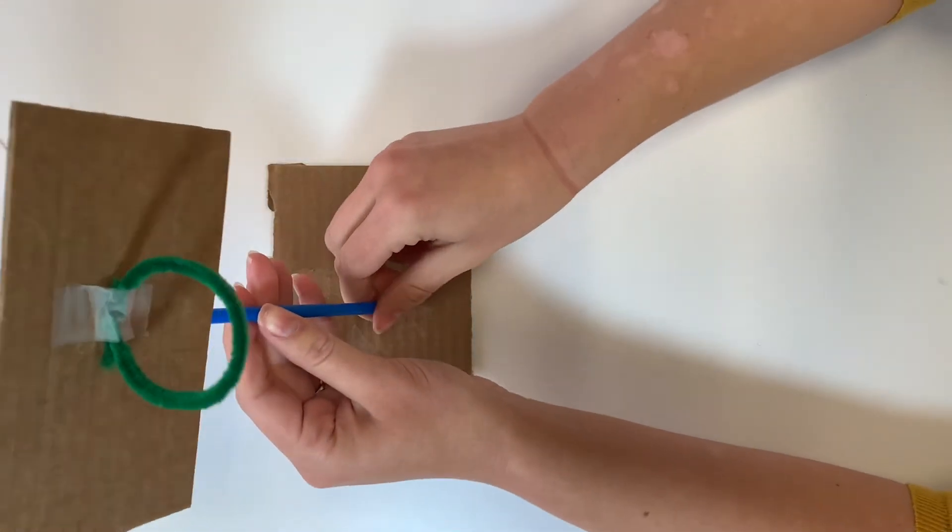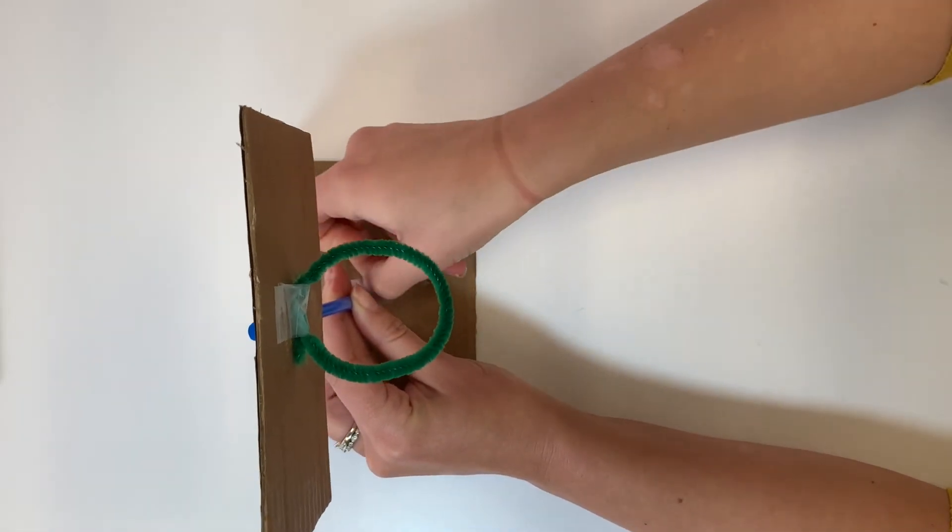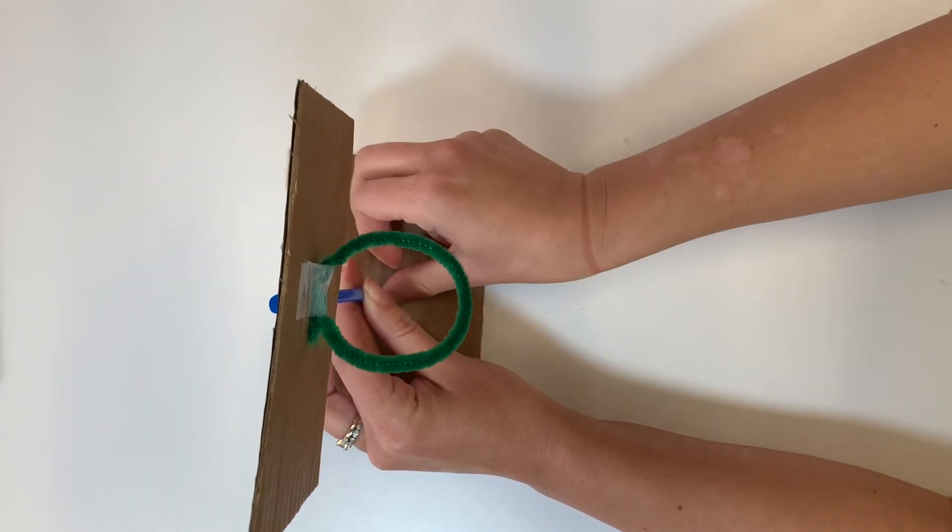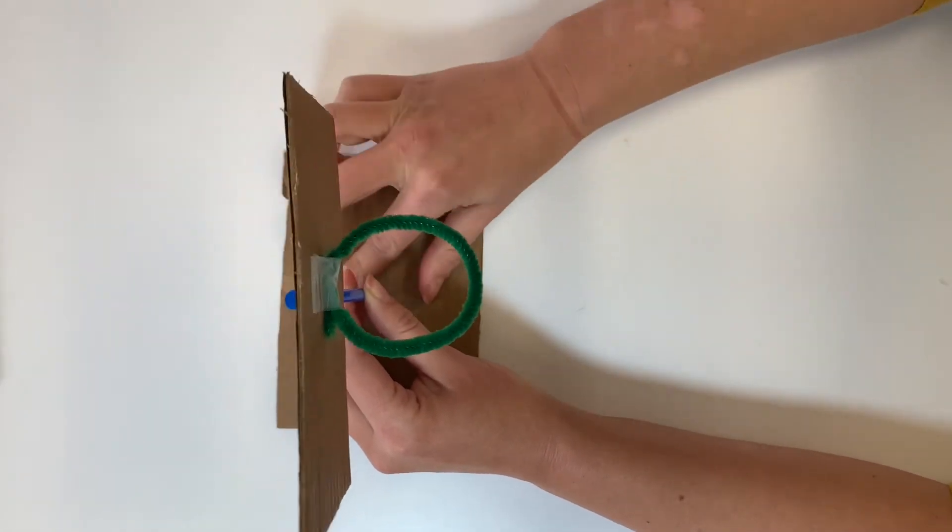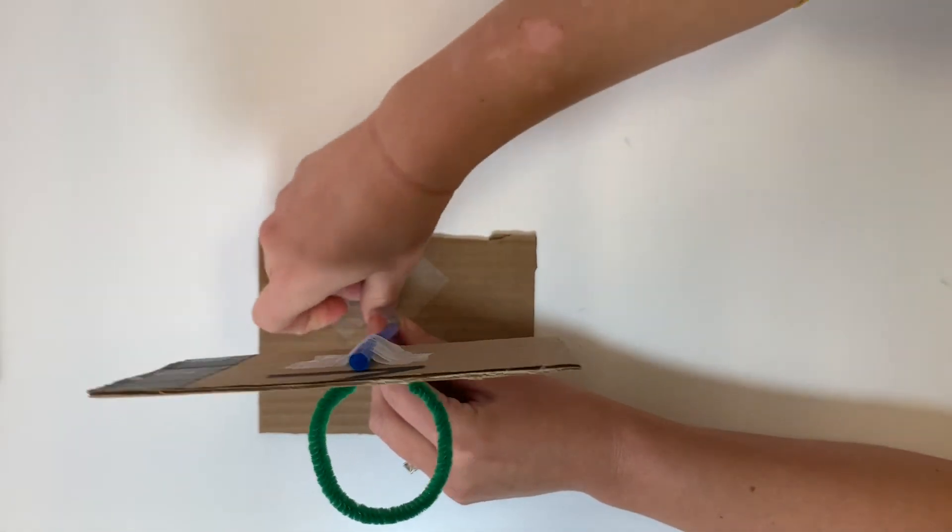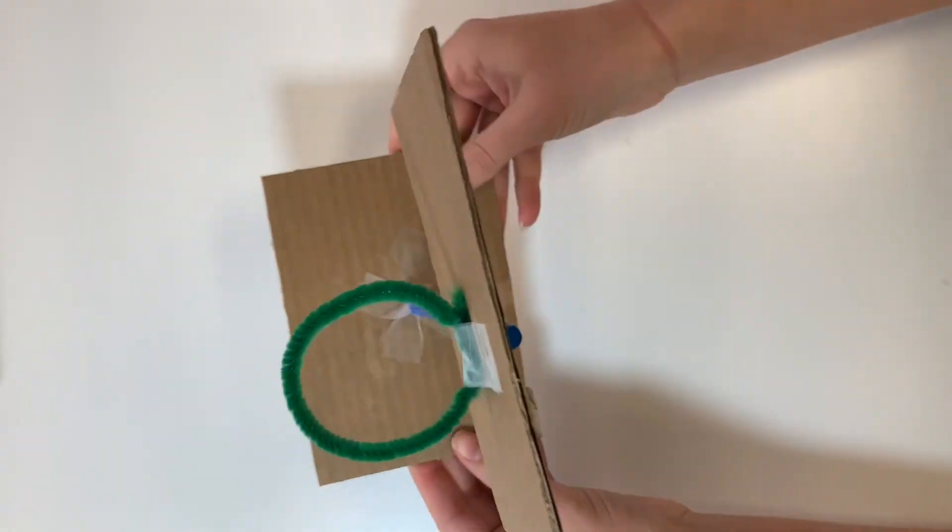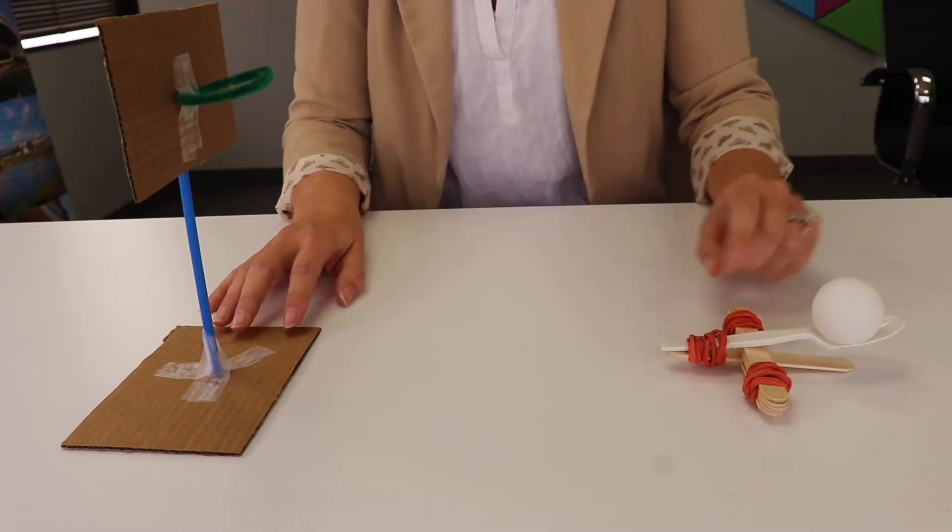Take the remaining cardboard square and attach the bottom of the straw to the square with tape. And now the hoop is complete.